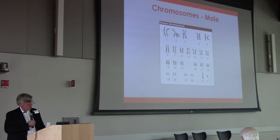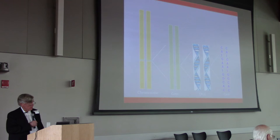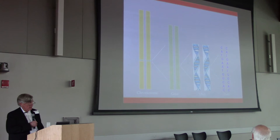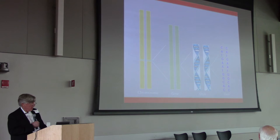On each chromosome there are many genes. If we look at this gene here and expand it, we can see the gene is actually quite big and is comprised of DNA. DNA is made up of only four letters — C, G, T, and A — that make up every gene.